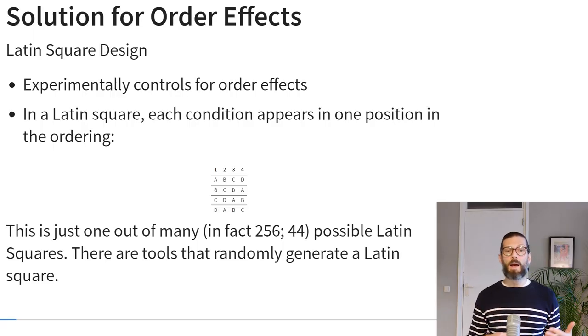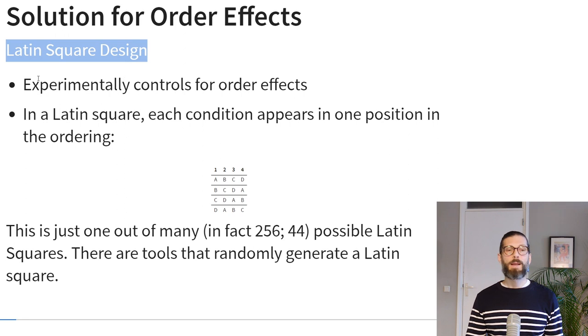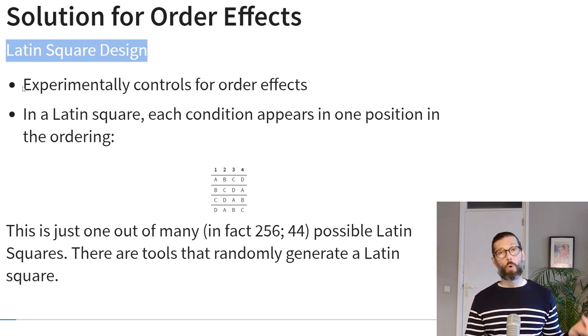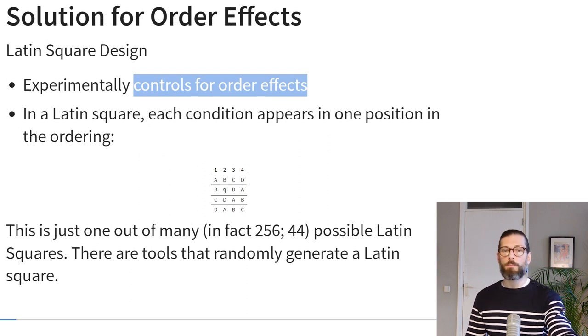There are solutions for dealing with order effects. We could try to control for them by switching up the order between participants. There are often many types of possible orders, and one way to deal with this is to use what's called a Latin square design, where you experimentally assign people to different orders of treatment and then control for the effect of order. In a Latin square, each condition appears in one position in the ordering.